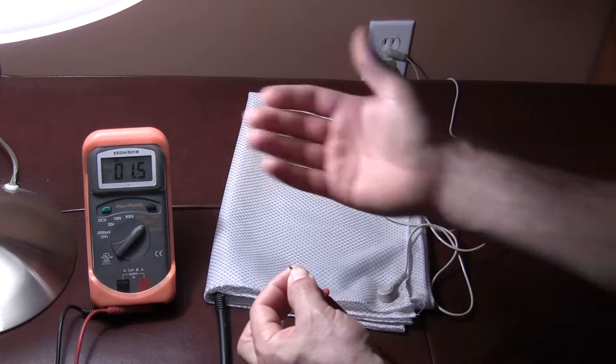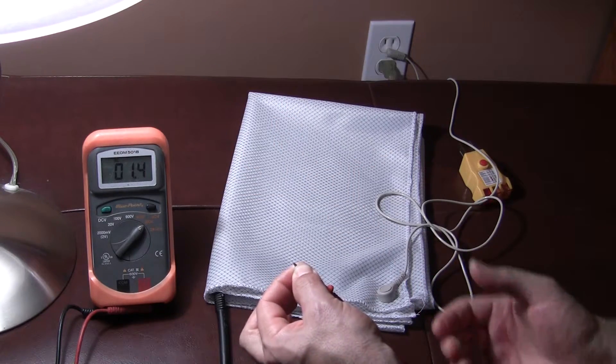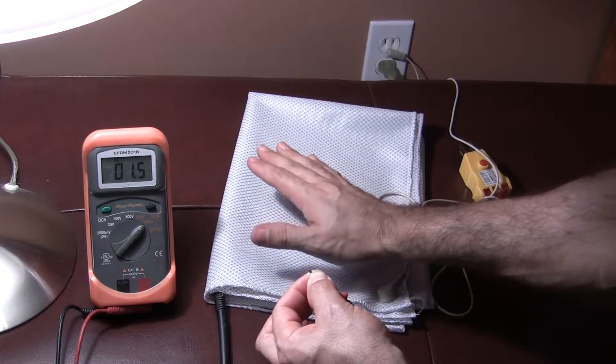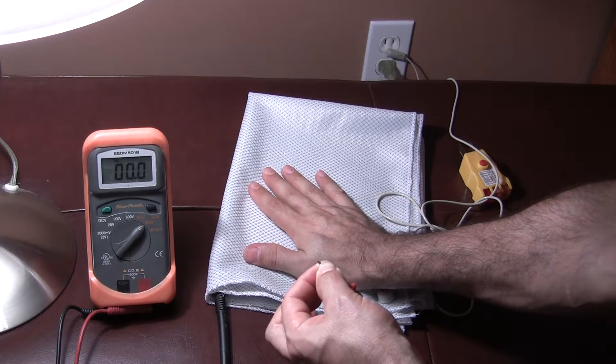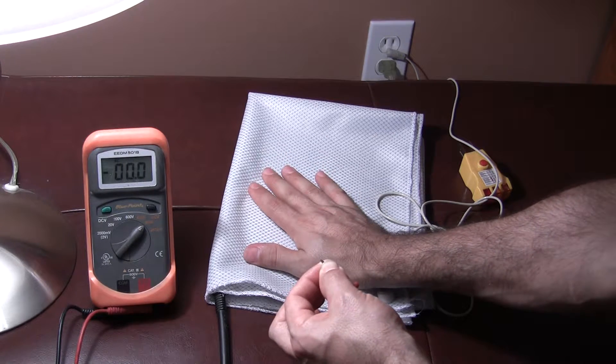As you can see, my voltage goes up to 1.6, 1.5 volts. What happens as soon as I lay my hand on this sheet? It equalizes to zero, which is Earth's potential.